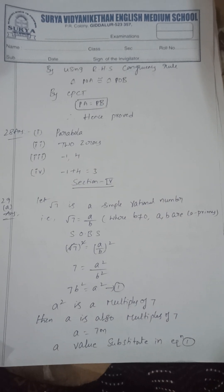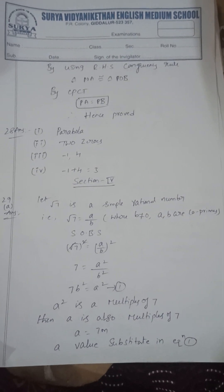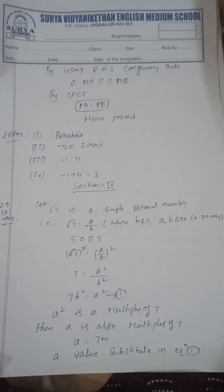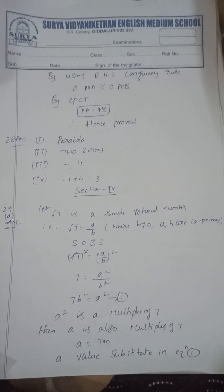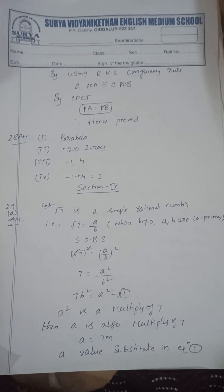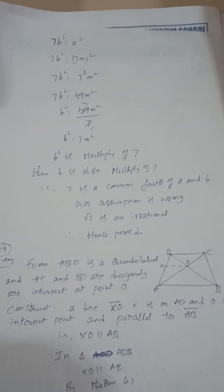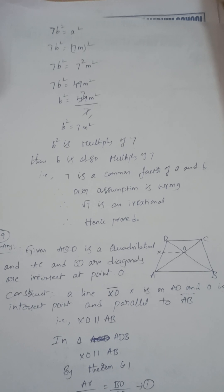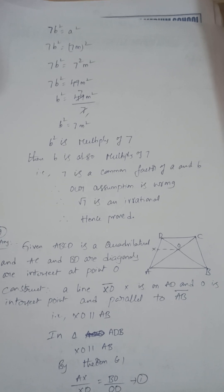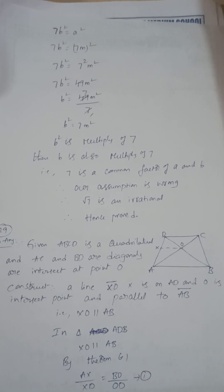Next section 4: prove that root seven is an irrational number. You can do that by using contradiction method. Root seven is an irrational number. A square is a multiple of 7, then A is also multiple of 7. A is equal to 7m. Substitute the A value in equation one, we can get b square is a multiple of 7, b is also multiple of 7. That is 7 is a common factor of A and B. Therefore our assumption is wrong.